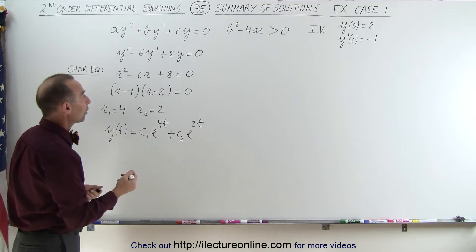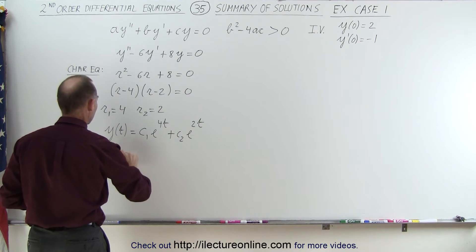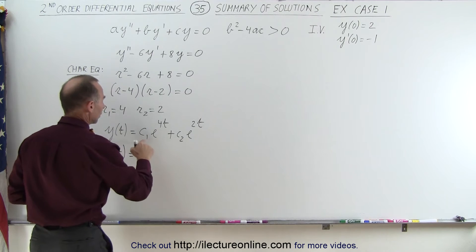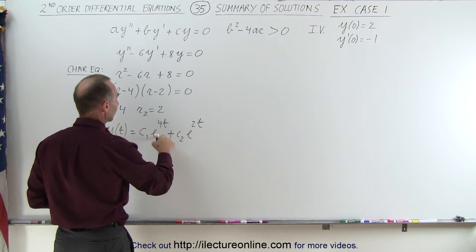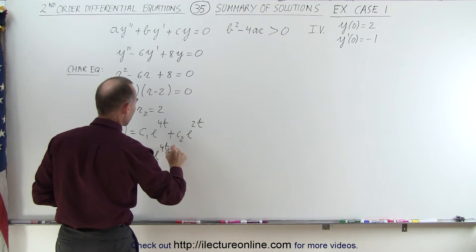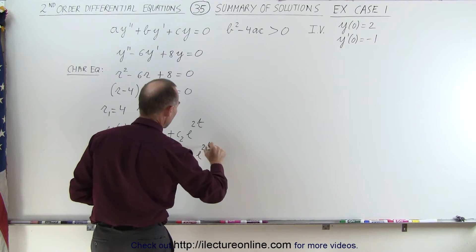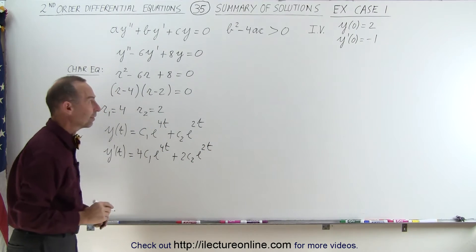So first of all, let's find the first derivative. So y prime of t is equal to, well, that would be e to the 4t times 4, or 4c1 e to the 4t plus 2c2 e to the 2t. So now we also have the first derivative.